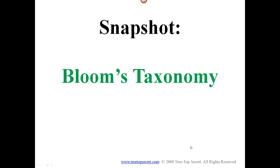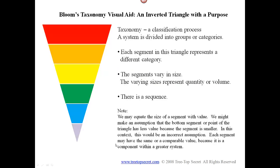A snapshot of Bloom's Taxonomy. We start with a visual aid that we're calling an inverted triangle with a purpose. If we look at what taxonomy means, we know that it's a classification process where a system or a whole is divided into groups or categories. Each segment in the triangle represents a different category, and the segments vary in size. Each size represents a different quantity or volume, and there is a sequence.